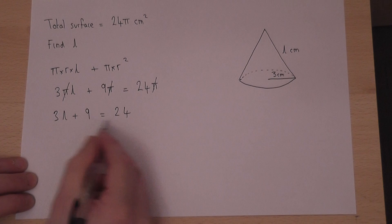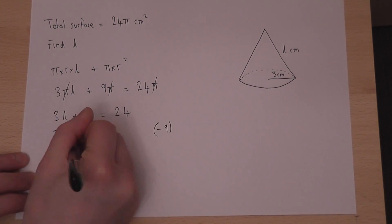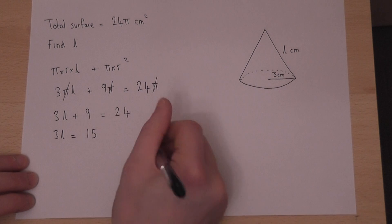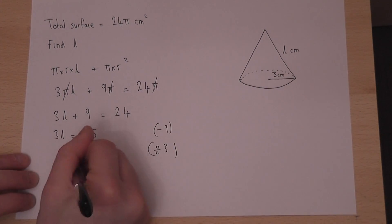If I therefore take 9 from both sides, I'm left with 3L equals 15. If I then divide by 3, I'm left with L equals 5.